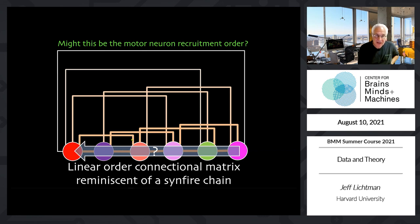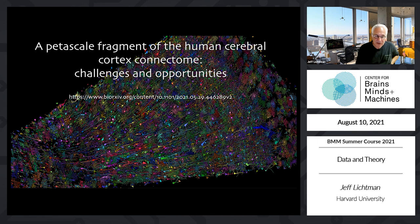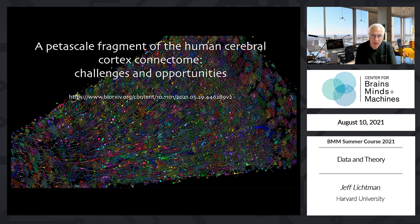I want to end with something hopefully easier to understand: an analysis from a large study that is in BioRxiv right now. It's a 1.4 petabyte data set of human cortex where we've done the complete wiring diagram, thanks to a lot of help from Google. I'm only going to focus on one particular point but give you a sense of how this data was generated.